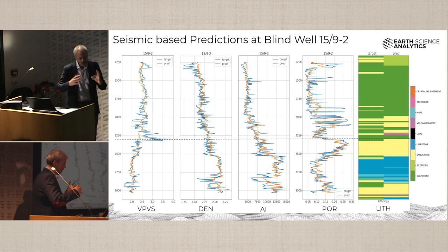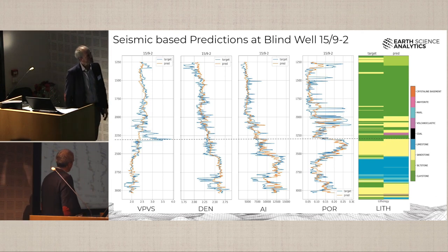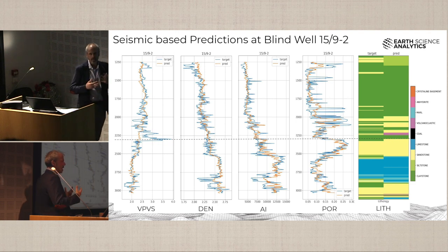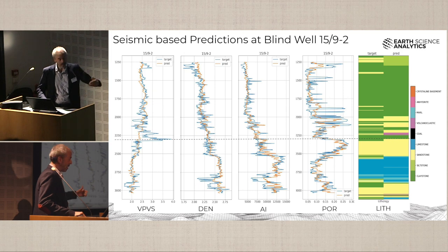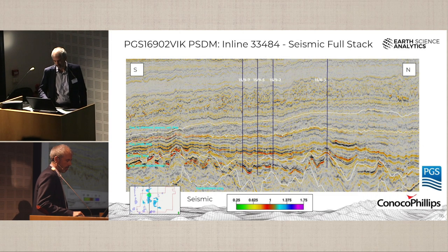We're happy that we've got a base trend of porosity being predicted. I've also shown AI, density, and VPVS, because on the way we should be able to predict elastic properties well before making the jump to rock properties. It's nice to see that those curves are also conformant.